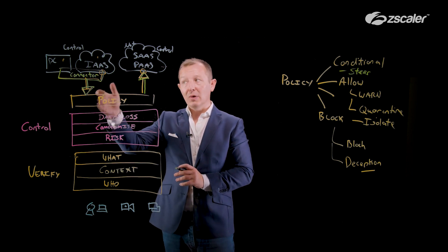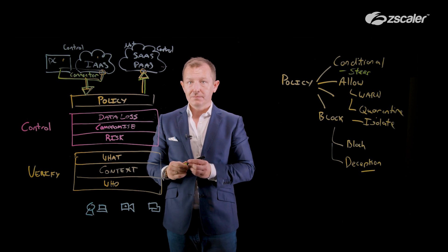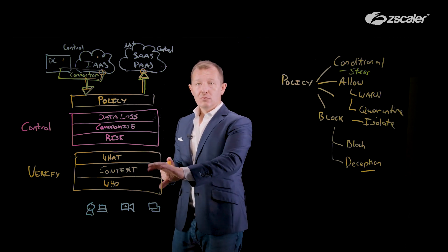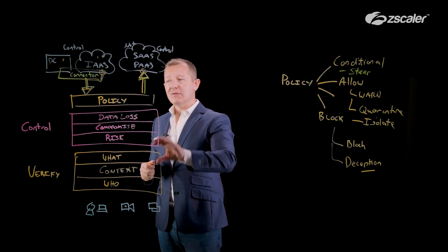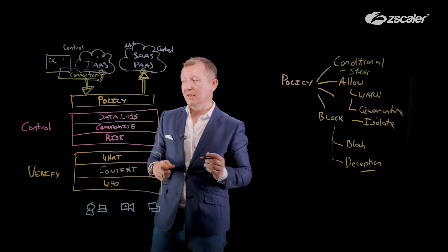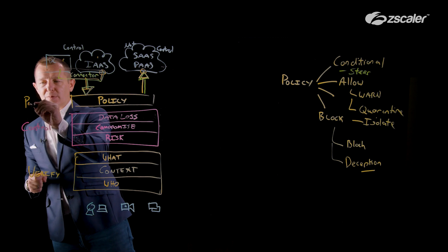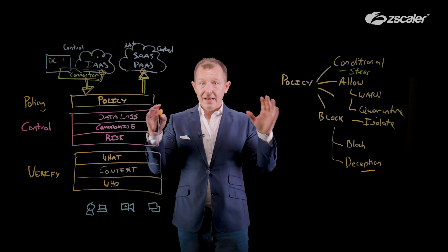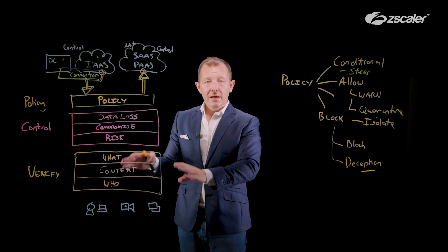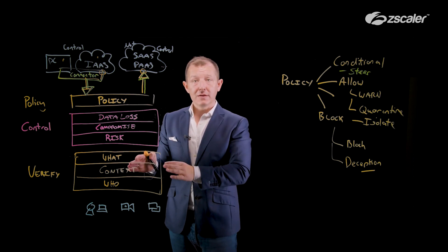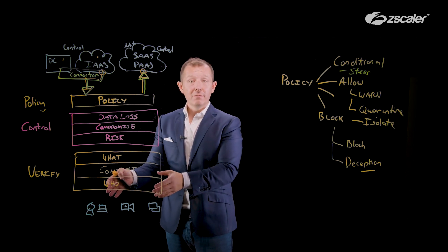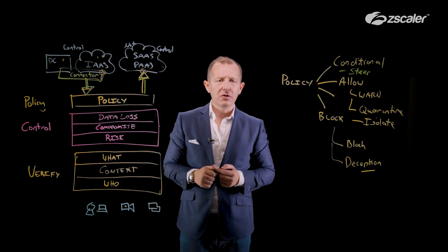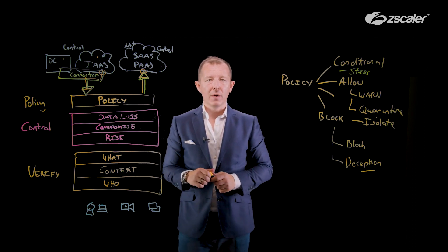We're steering the application request through the entirety of the verify, control, and policy layer up to the applications where they need to go. With that, we're able to determine not only who, but where they're going, what controls they need, and the policy layer — which is also the final element. It allows us to have that connection end-to-end protected and assessed every time there's a request, and we do it all again every time there's a new request.